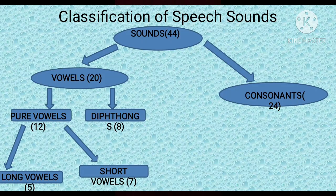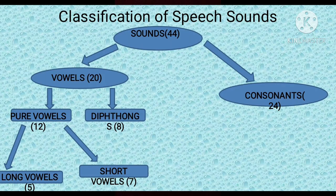I am telling you about speech sounds, not about alphabets. When we consider English alphabets, we have 26 alphabets and we often classify them into vowels and consonants. We have 5 vowels — A, E, I, O, U — and the other 21 letters are consonants. But here we are discussing about speech sounds or phonemes. We have 44 phonemes in total, classified into two broad categories: vowels and consonants. Out of 44, 20 are vowel sounds and 24 are consonants.